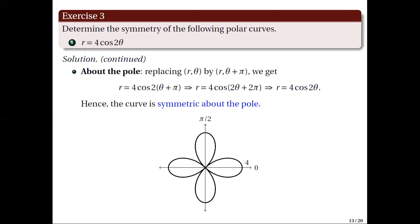Which means, after testing the first two types of symmetries and obtaining a positive result for both, then automatically the third symmetry test will also yield a positive result.